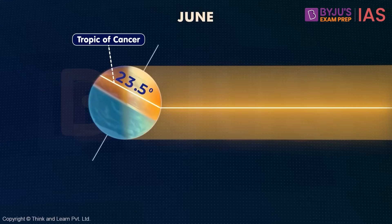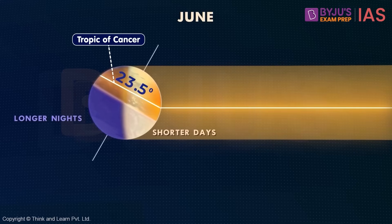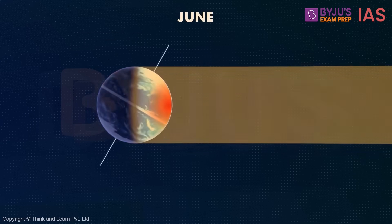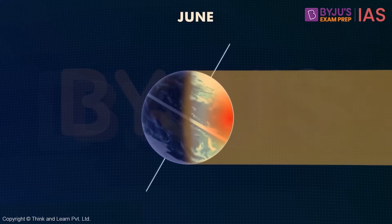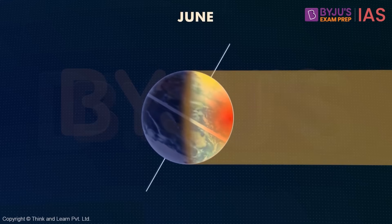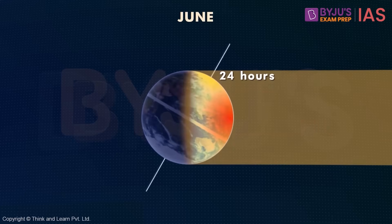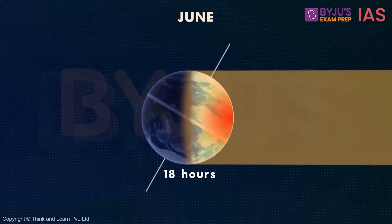The opposite happens in the southern hemisphere — the days are shorter and the nights are longer. Because it is tilted away from the sun, they will experience winters. We can also see something interesting happening over the poles. On the North Pole, there is daylight for 24 hours, and on the South Pole, it's 24 hours of darkness.